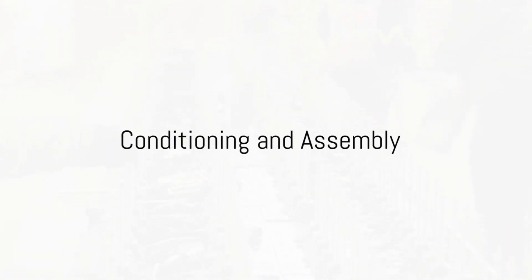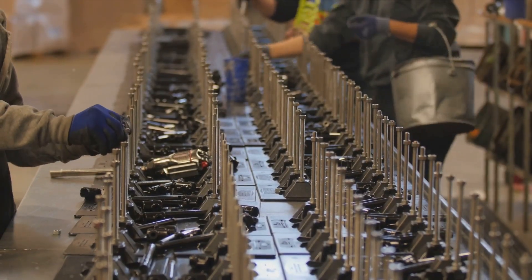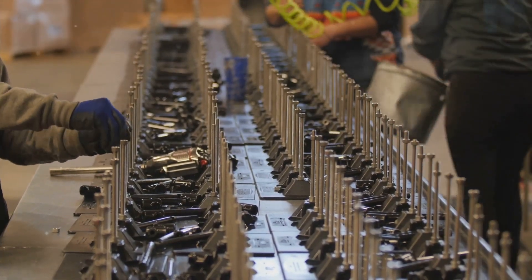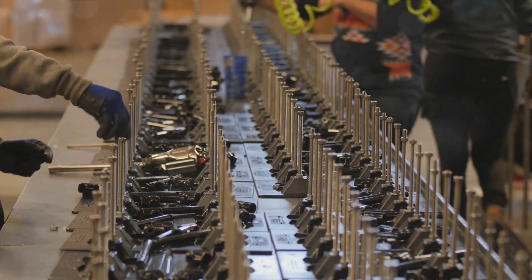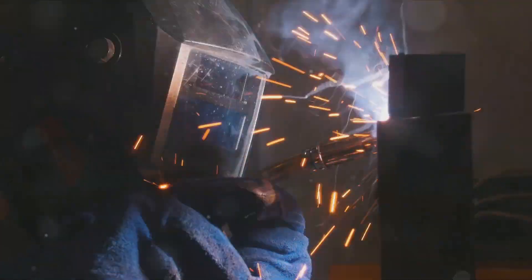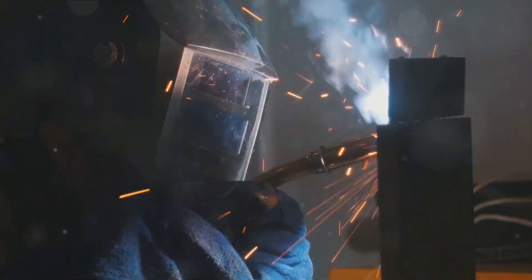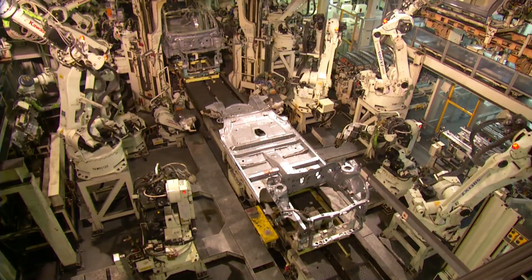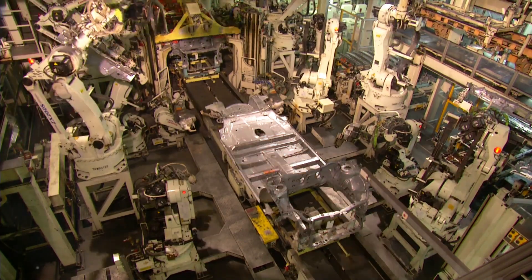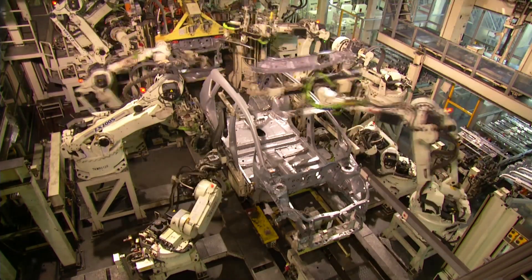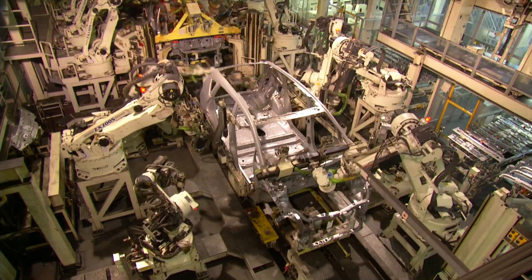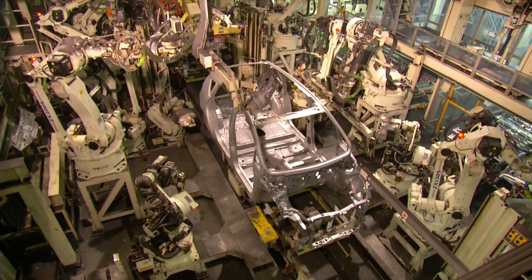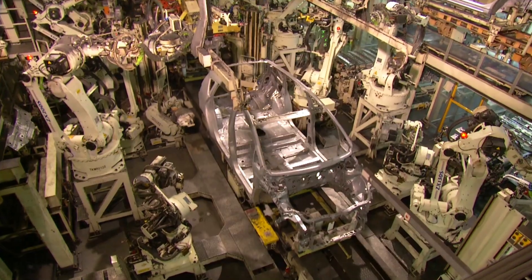Conditioning and assembly processes involve joining parts together or altering their properties to improve functionality. Welding, soldering, and heat treatment fall under this category. The body of your car, which is a combination of multiple separate pieces, is a perfect example of an assembly process.